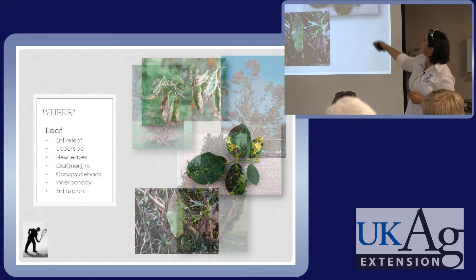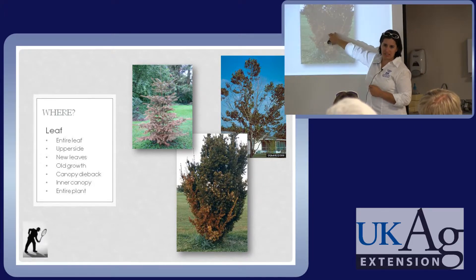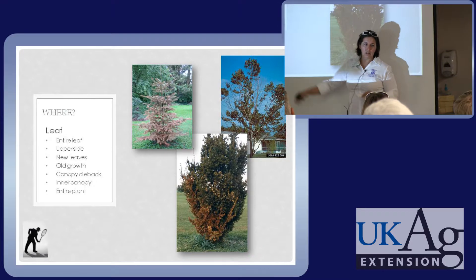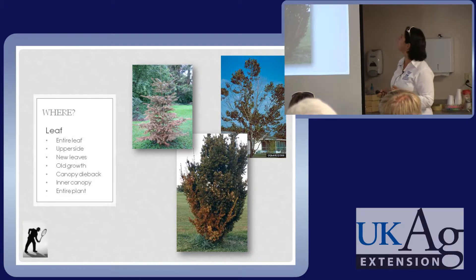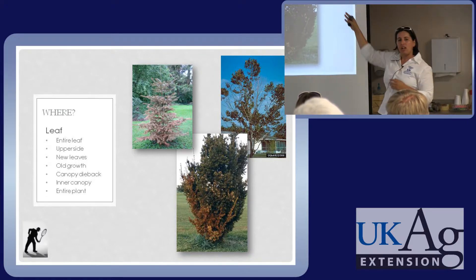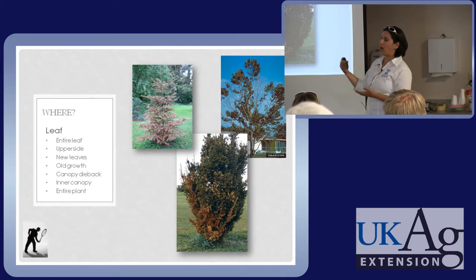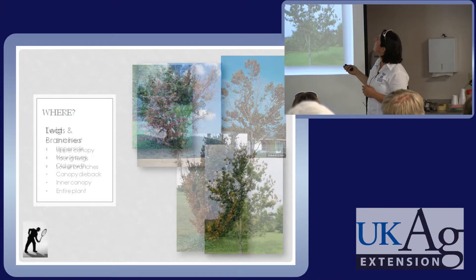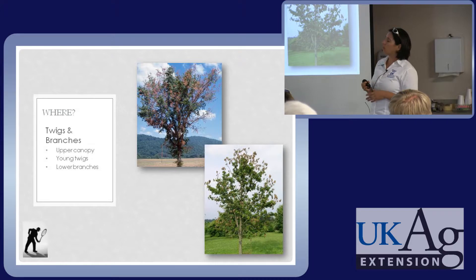With conifers especially, is defoliation happening from the inside of the canopy and not the outside, or in the lower canopy and not on top? Most plant diseases like black spot of rose are typically happening on the inside following the vein. Scorching or collapse that doesn't follow veins typically is not going to be a plant disease. If you see dieback from the bottom — like this taxus — that's often a pH issue. If the entire plant is collapsing, that's a root issue.